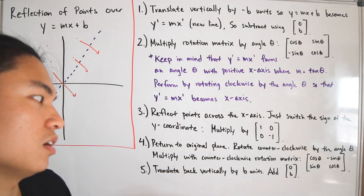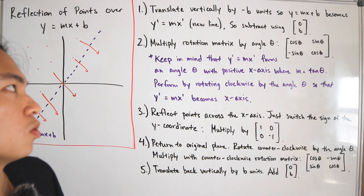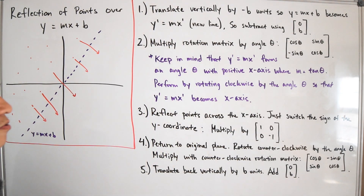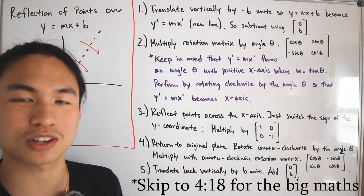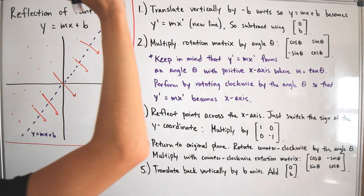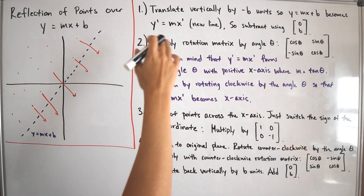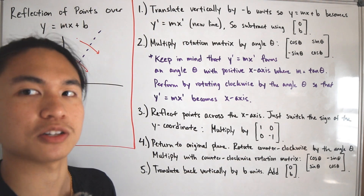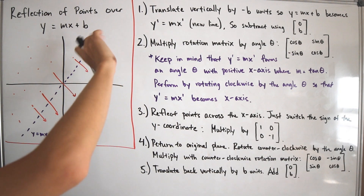To summarize the steps: Step 1 is to translate vertically by negative b units so that y equals mx plus b becomes y-prime equals m times x-prime. We can do this by subtracting the column vector (0, b). Don't confuse the prime notation with a derivative — it just denotes the new line.